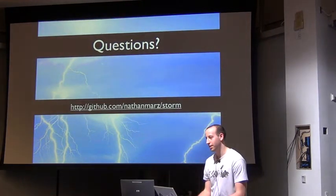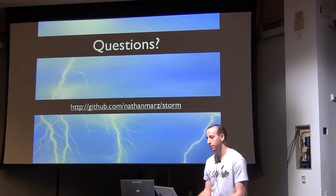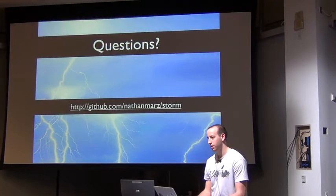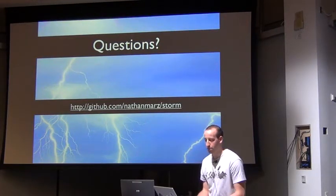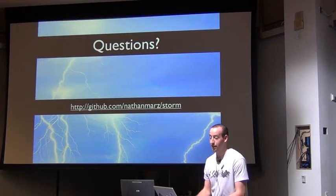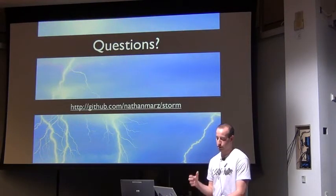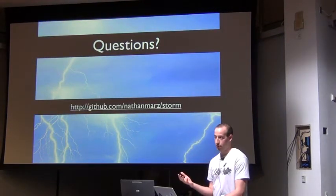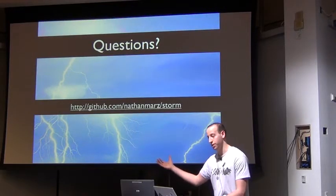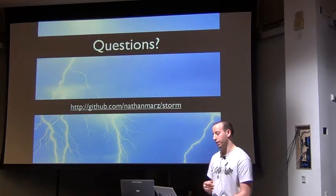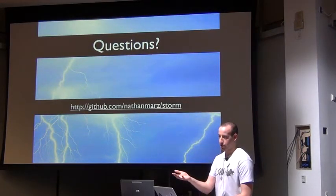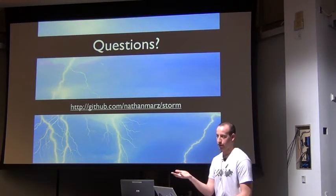Q&A — The reach topology example runs in about two seconds, even though it has to make thousands of database calls to fetch the social graph. There's a future abstraction called State Spout being worked on, which lets you synchronize an external source of state into a topology's memory. This would essentially eliminate all the database calls and get something like reach computation down to a few hundred milliseconds.